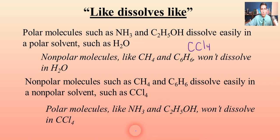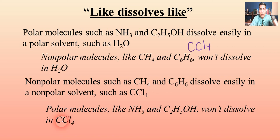Polar solutes dissolve in polar solvents, and non-polar solutes dissolve in non-polar solvents. Ammonia (NH3) or ethanol is probably not going to dissolve into a non-polar solvent like carbon tetrachloride. How do you figure out if something is polar or non-polar? Remember from Lesson 9 — you have to draw it out, using its Lewis electron dot structure. If it has any unbalanced region of negative charge, it's polar. If everything is evenly distributed, it's non-polar.